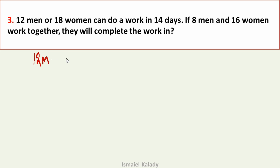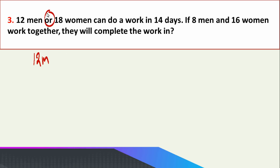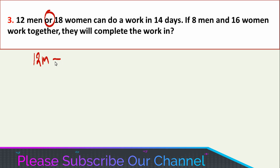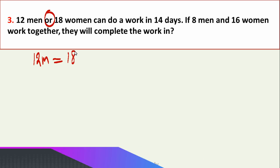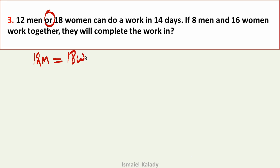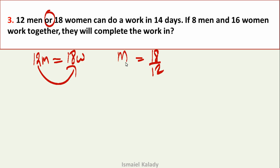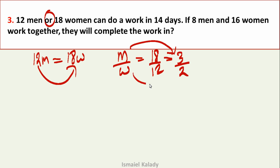We set up: 12 men × 14 = 18 women × 14. So M divided by W equals 18 divided by 12, simplified to 3 by 2. Men's efficiency is 3 and women's efficiency is 2.